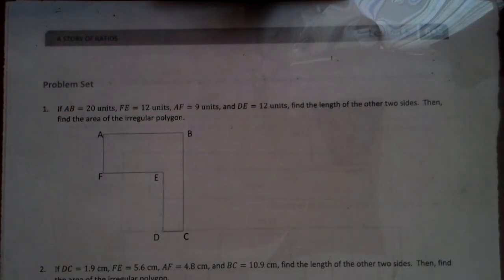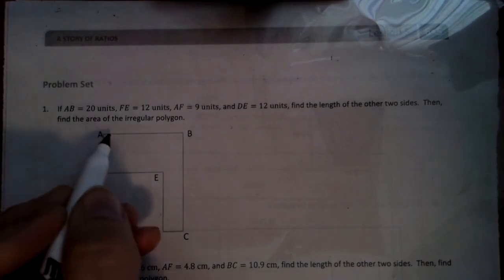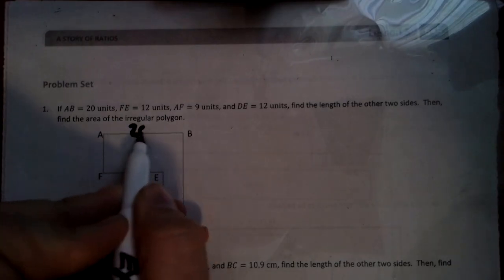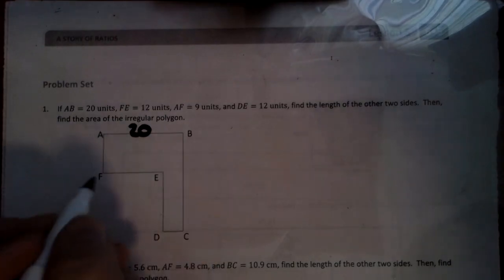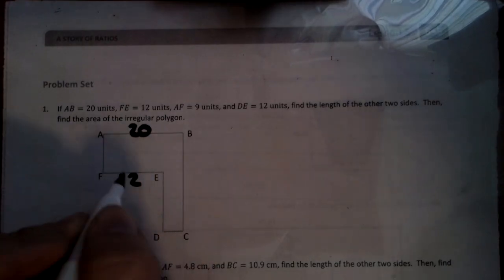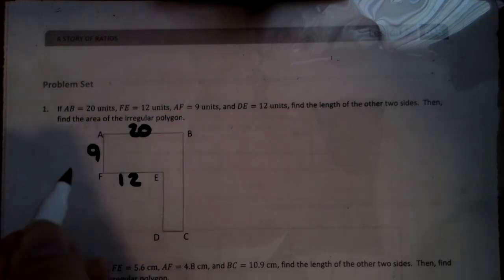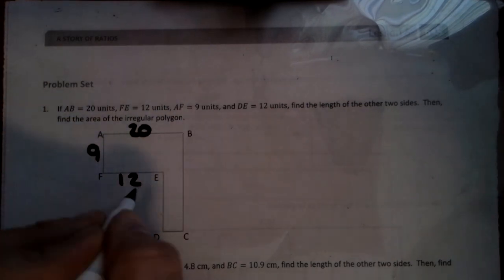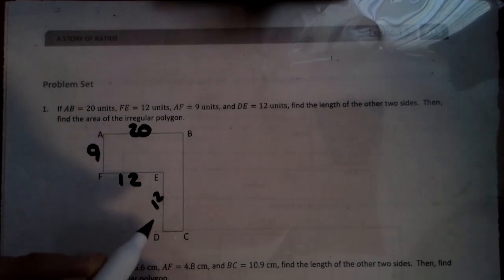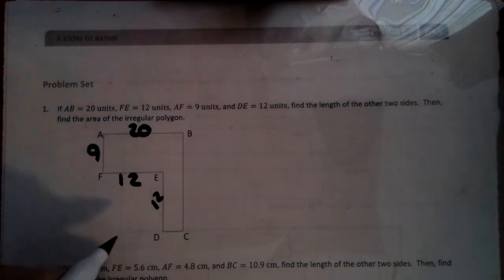What we're doing here is it's an irregular shape, and we're finding the area of an irregular polygon. So we have to label up the sides. AB is 20 units, FE is 12, AF is 9, and DE is 12. Find the length of the other two sides, then we have to find the area.